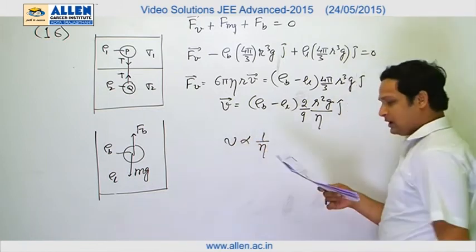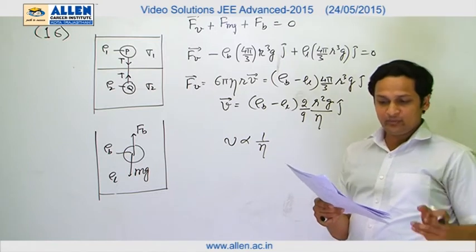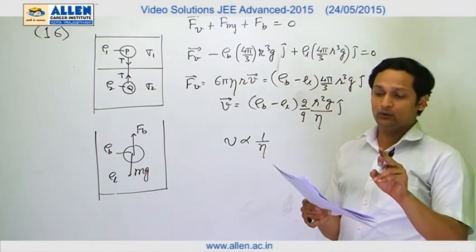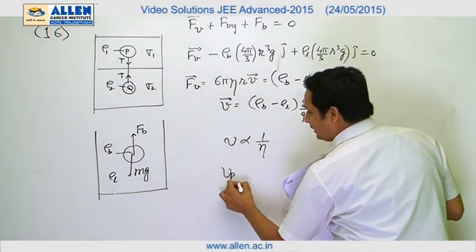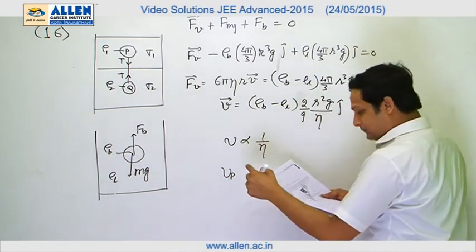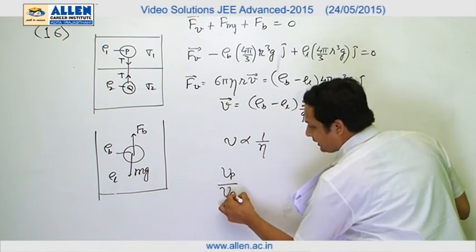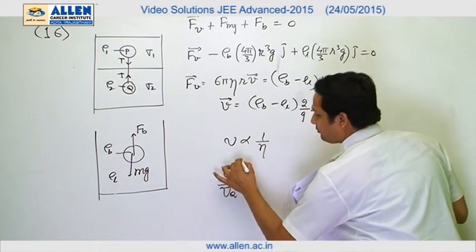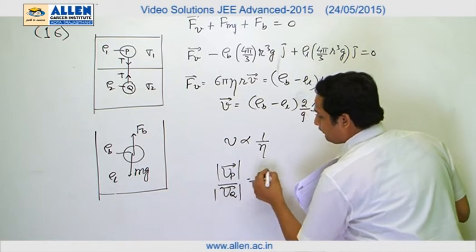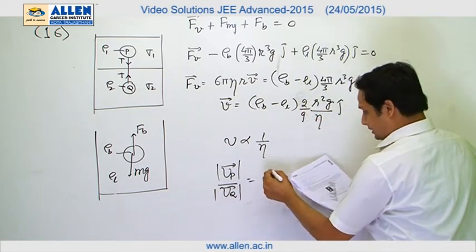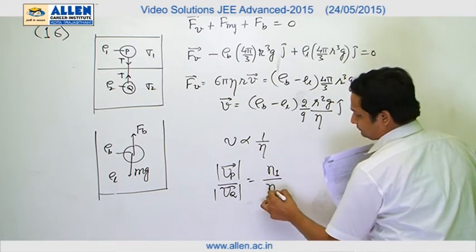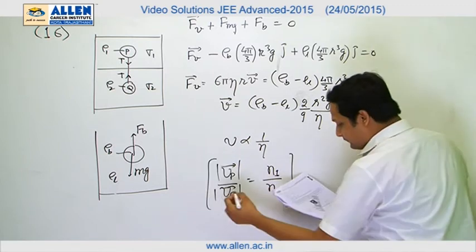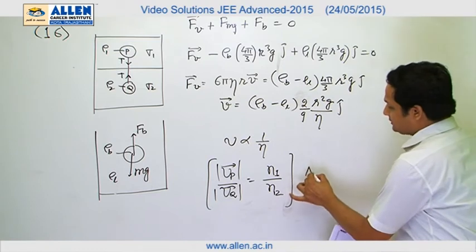So V is proportional to 1 upon eta. In the question it is given that sphere P is in L2, so the velocity Vp is proportional to 1 upon eta 2. So Vp divided by Vq, we have to find the mod, it will be equal to eta 1 divided by eta 2. Hence the option is A. A is correct.